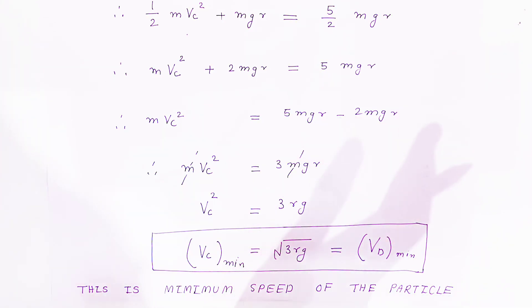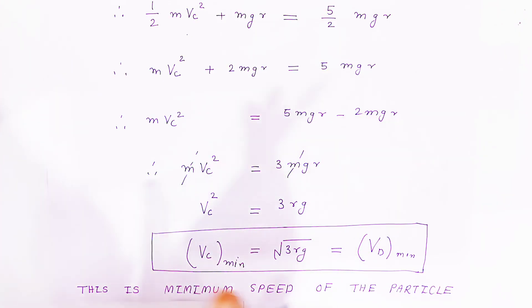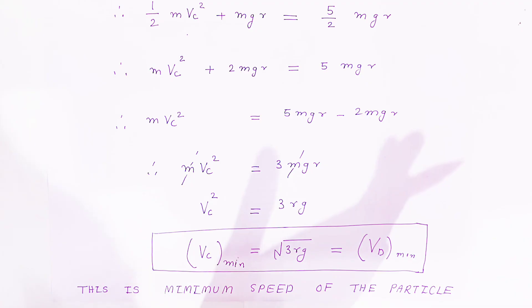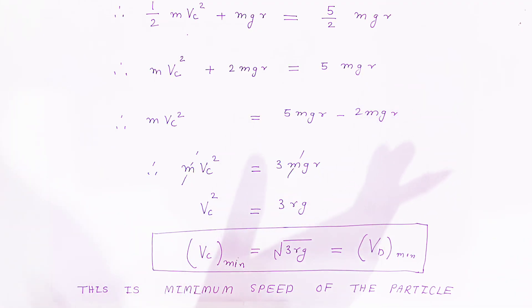These are the expressions for minimum velocity at different positions when a particle is performing vertical circular motion: v_A = √(Rg) at the top, v_B = √(5Rg) at the bottom, and v_C = v_D = √(3Rg) at the midpoint. These are very important for examination. Please share and subscribe. Thank you very much, God bless you.